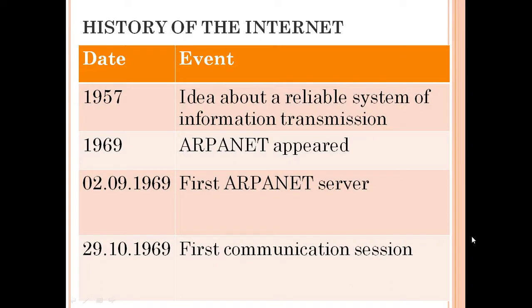History of the Internet. In 1957, the idea about a reliable system of information transmission. In 1969, ARPANET appeared. In 1969, September, the first ARPANET server. In 1969, October, the first communication session.